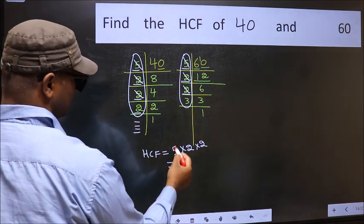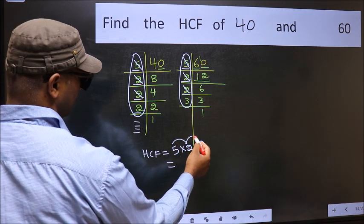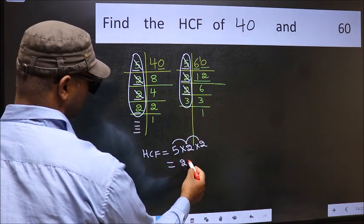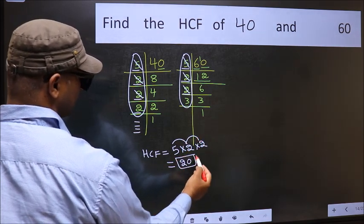So our HCF is 5 times 2 is 10, times 2 is 20. 20 is our HCF.